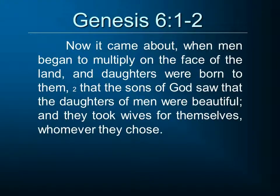Now in Genesis chapter 6, verses 1 through 2, we read that it came about when men began to multiply on the face of the land and daughters were born to them, that the sons of God saw the daughters of men were beautiful and they took wives for themselves, whomever they chose. One of the questions that immediately comes to mind in trying to interpret this passage is that phrase, 'the sons of God,' and we're going to ask the question, what does that mean?